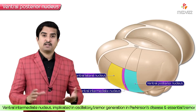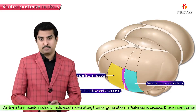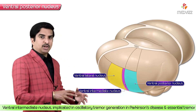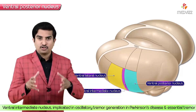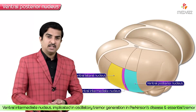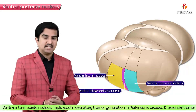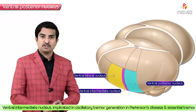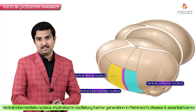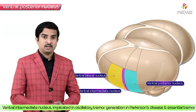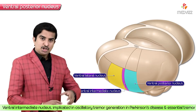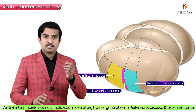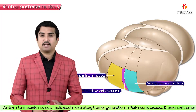Recent studies reveal that the ventral intermediate nucleus is implicated in oscillatory tremor generation in Parkinson's disease and essential tremor. This nucleus is responsible for suppression of tremor, so any pathology associated with the intermediate nucleus is thought to be responsible for tremor generation. Stimulation of this part of the nucleus has been identified as responsible for suppression of tremor in Parkinson's disease.